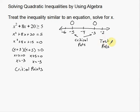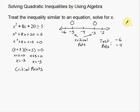When choosing test points, pick numbers that are easy to work with. I'll choose negative 6 for the region less than negative 5, negative 4 for the region between negative 5 and negative 3, and 0 for the region greater than negative 3. I love working with 0 — it's very easy to add, subtract, and multiply. Always try to use 0 if you have a choice.